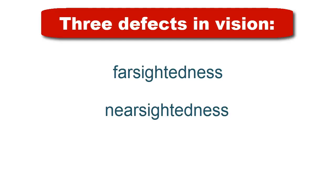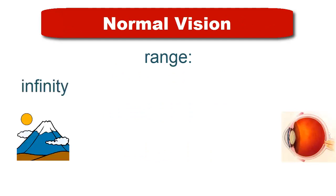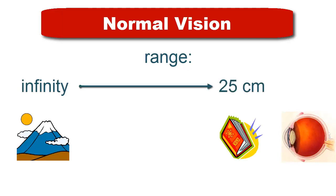The three types of common defects in vision: one's called farsightedness, then there's nearsightedness, and the last one's called astigmatism. With normal vision you can accommodate and see objects from about infinity, the far point, down to about 25 centimeters at the near point. Not everybody has this normal vision.